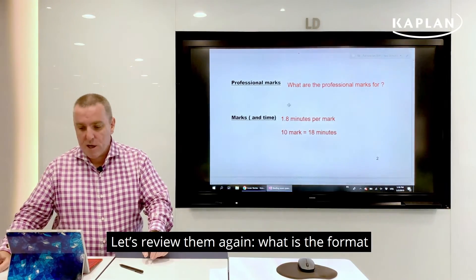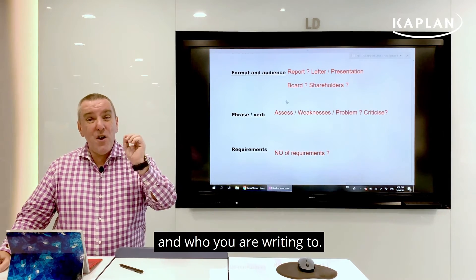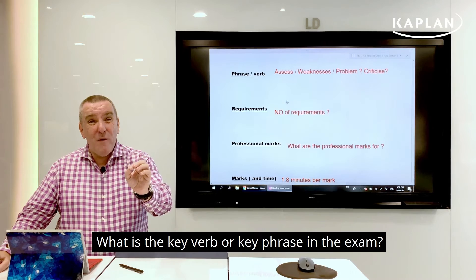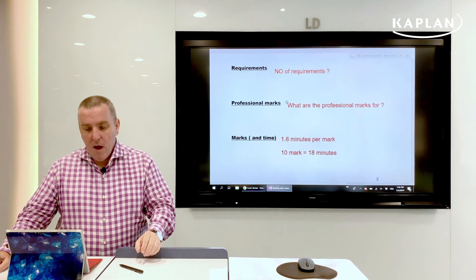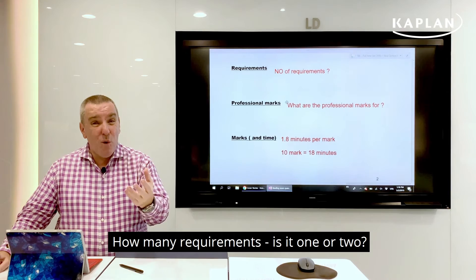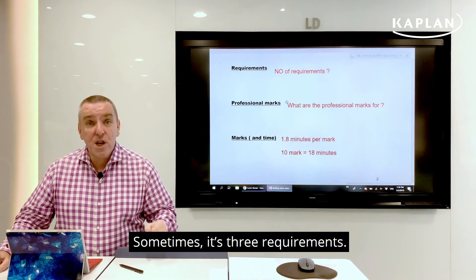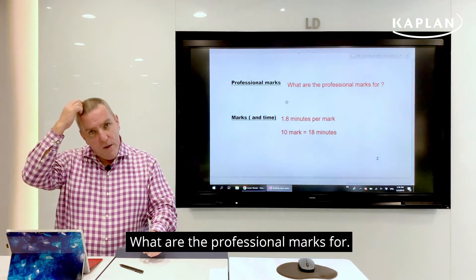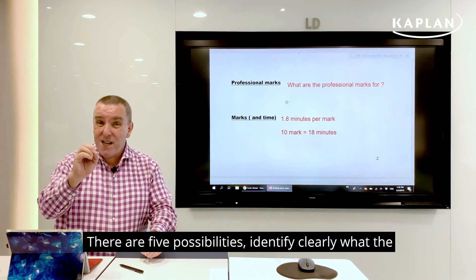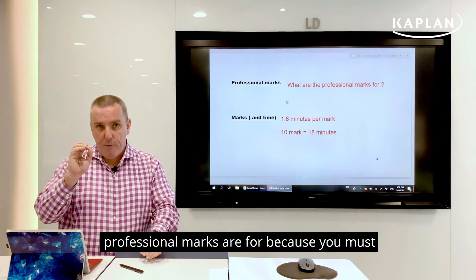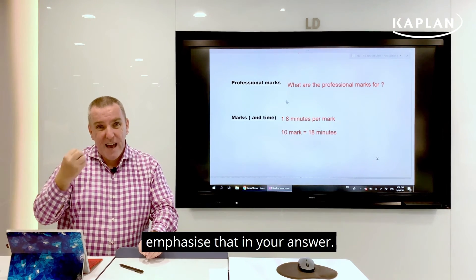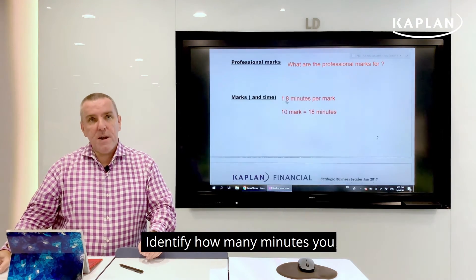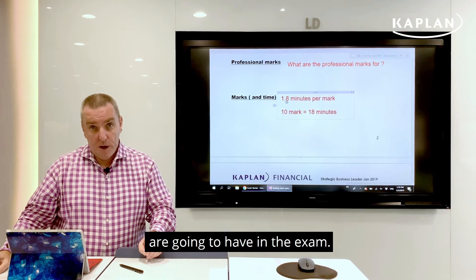So there are five elements — let's review them again. What is the format and who is your audience? What is the key verb or key phrase? How many requirements — is it one, two, or sometimes three? You must meet all requirements carefully. What are the professional marks for? There are five possibilities, so identify clearly what they are and emphasize that in your answer, since 20% of your marks are professional marks. And identify how many minutes you're going to have per question.